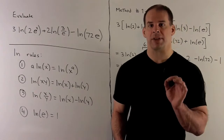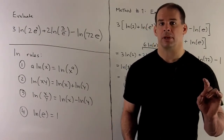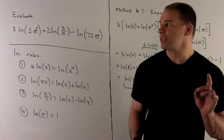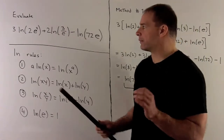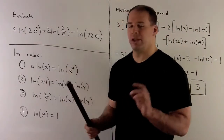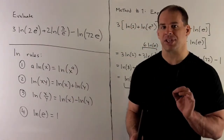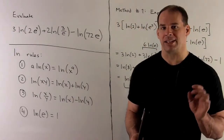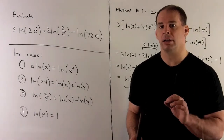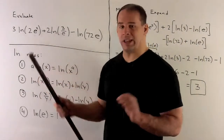For Method 1, we're going to expand everything, going through term by term to see what happens. For the first term, I want to expand natural log of 2e squared. We have a product on the inside, so I can write that as natural log of 2 plus natural log of e squared, in parentheses, and pick up the 3 later on.